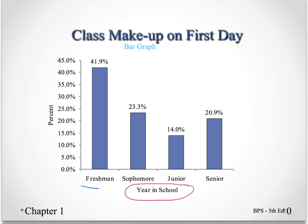We have put each of the values that variable can take on along the horizontal axis, and going up the vertical axis we have the percents. Then we have a bar for the freshmen that goes up to the 41.9% mark, and a bar for the sophomores that goes up to the 23.3% mark.